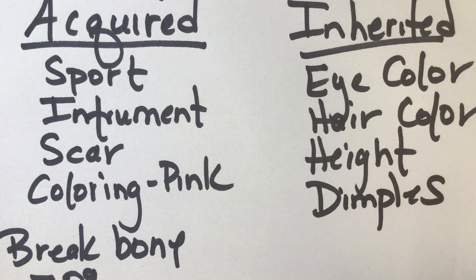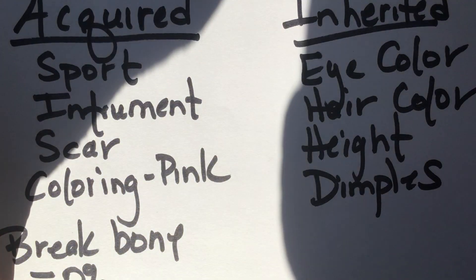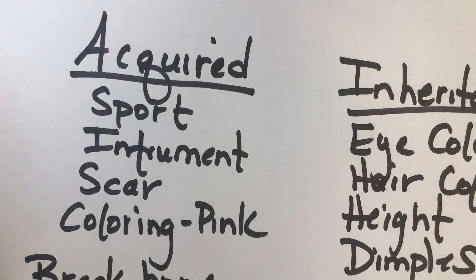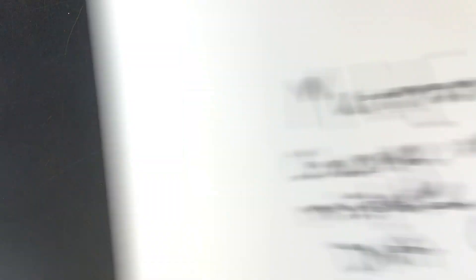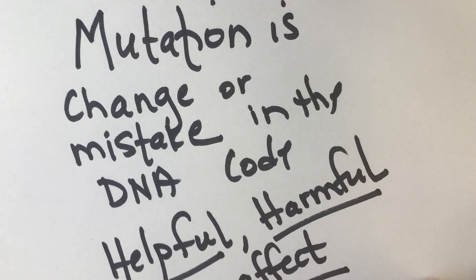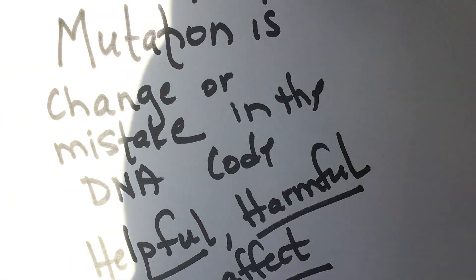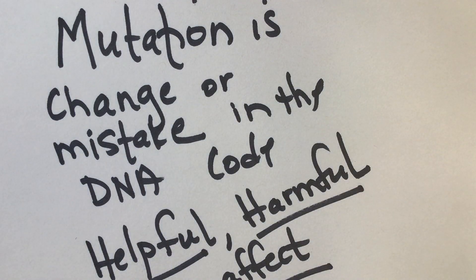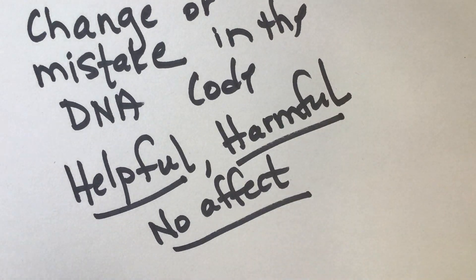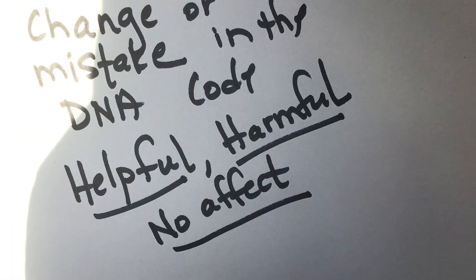So those are the two things. Acquired versus inherited. Acquired you gained during your lifetime. Inherited you got from your parents. And then the other thing that's on this test is mutation. A mutation, again, is a change in the DNA. And mutations can be harmful, helpful, or have no effect.